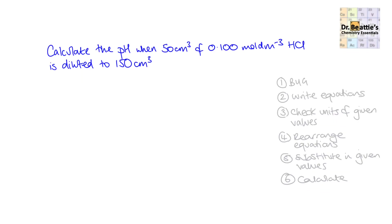Here is a typical dilution strong acid calculation. We can follow our six steps for any calculation and apply it to pH calculations. First, we box the actual target — the goal — which is the pH when we've got a diluted amount of the hydrochloric acid.